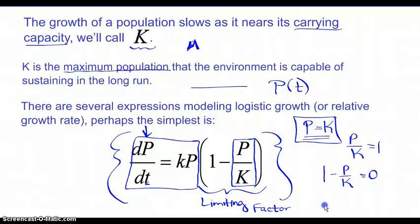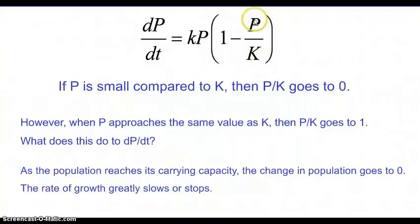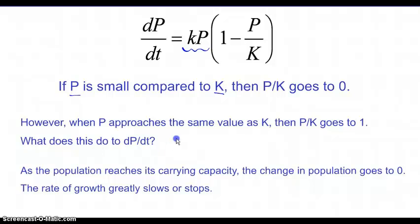If p is small compared to K, then p over K goes to zero, and one minus zero is one — so we have exponential growth. However, when p approaches K, that ratio goes to one, and the rate of change then goes to zero. As the population reaches its carrying capacity, the change in population goes to zero and the rate of growth slows or stops.